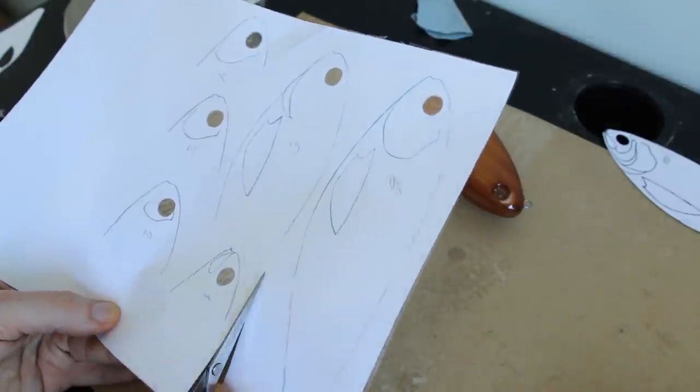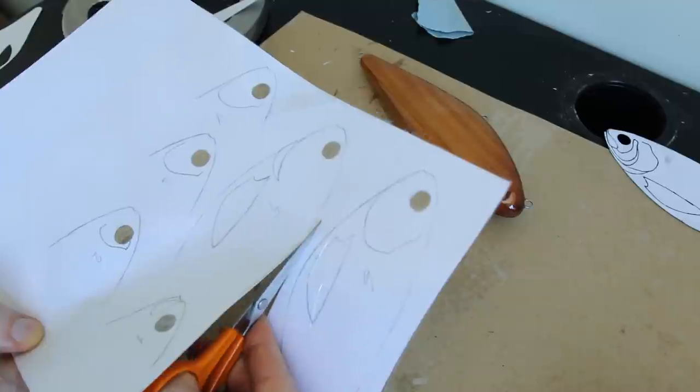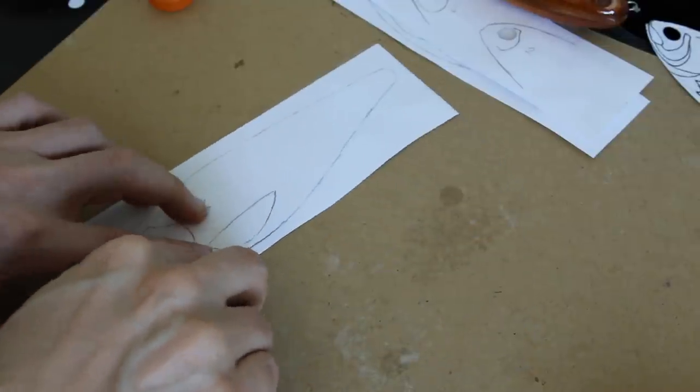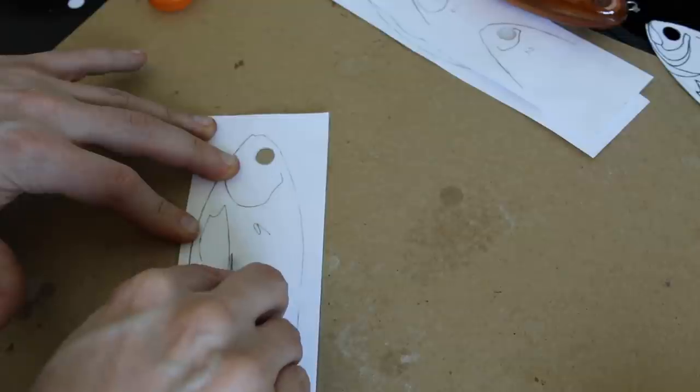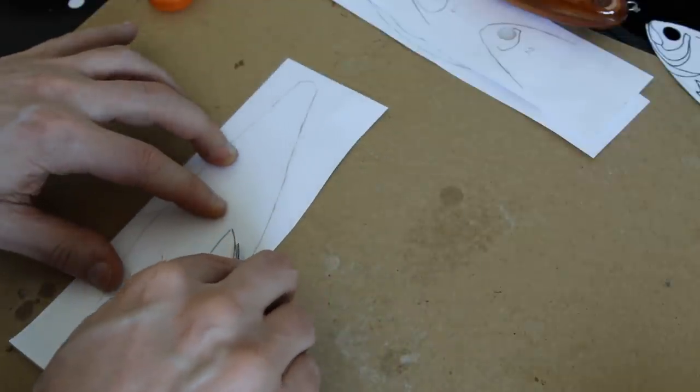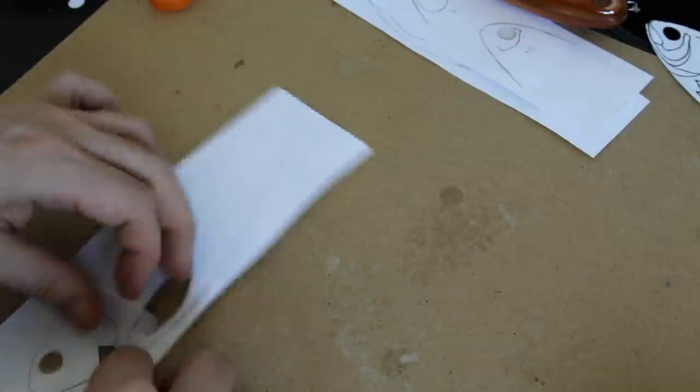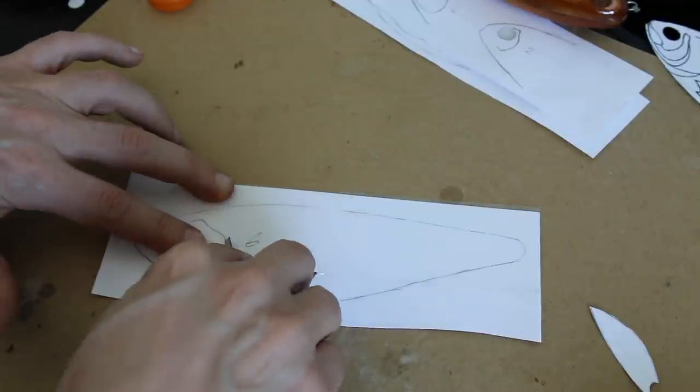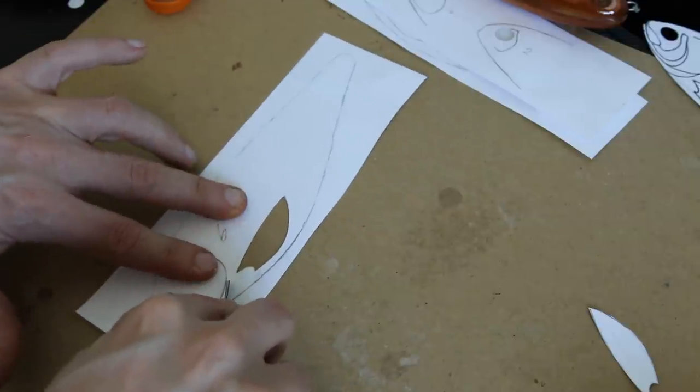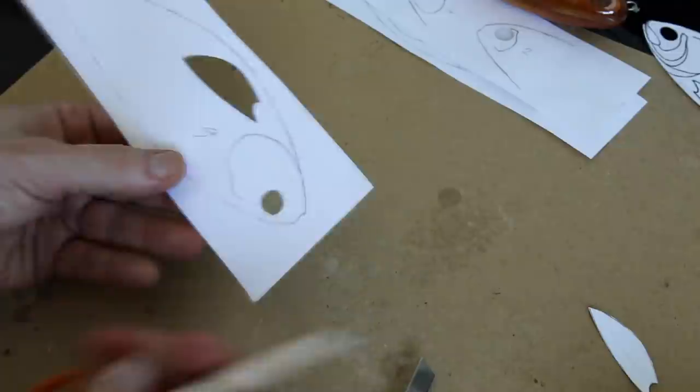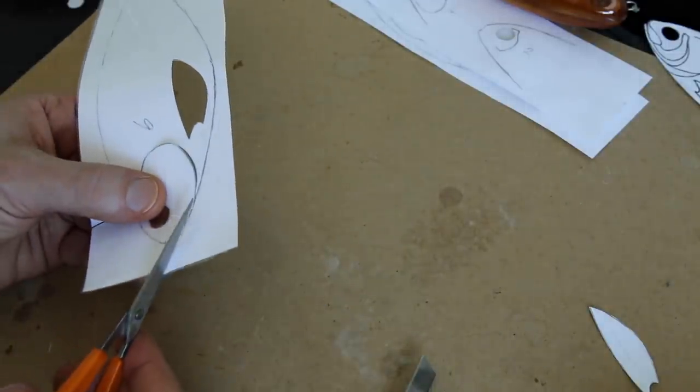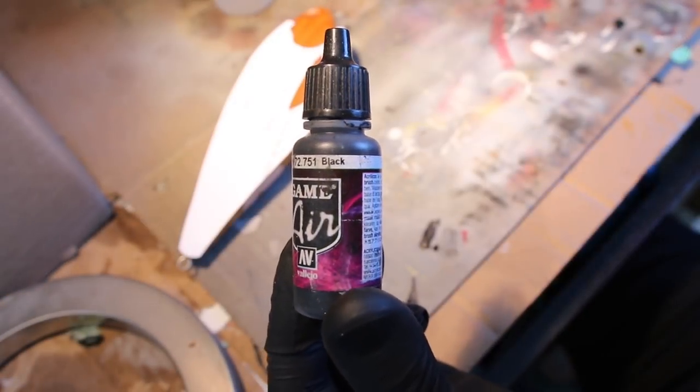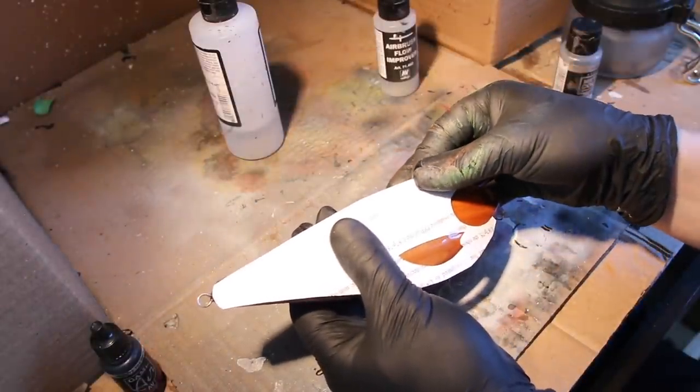Now that both sides have been covered with tape I'm just going to cut these out and we can start slinging some paint. Now that we have cut all of our stencils we can actually start painting, and by we I mean me.